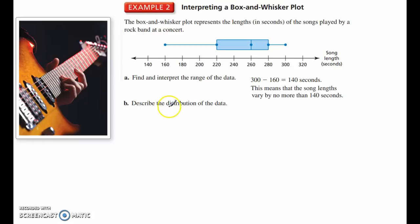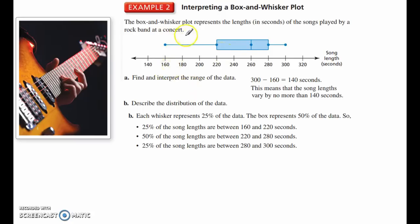Describe the distribution. Describing the distribution. So I want to know where is it more clustered, where is it spread apart. If I look at this, we know each whisker is 25%, so 25% is from 160 to 220, 25% is from 220 to 260, or I could say the whole box as one is 50%, so 50% of the data falls in between 220 and 280, and then 25% of the data falls in between 280 and 300 seconds.